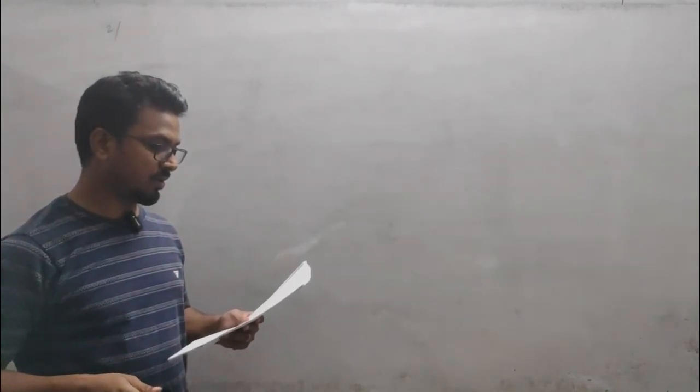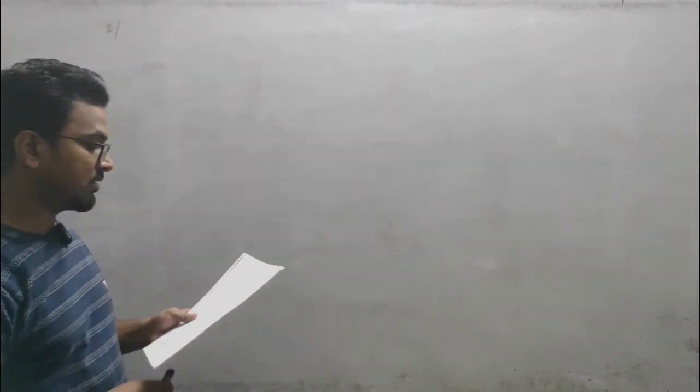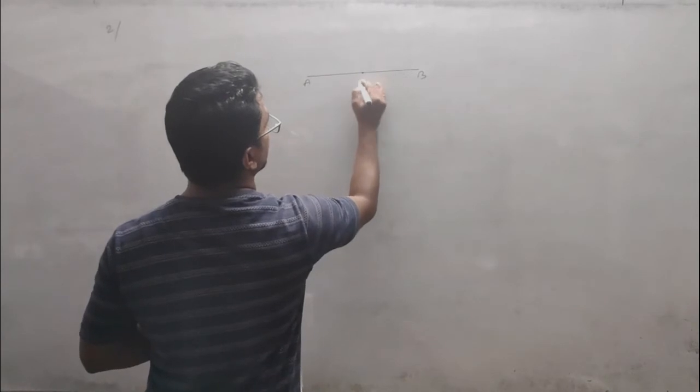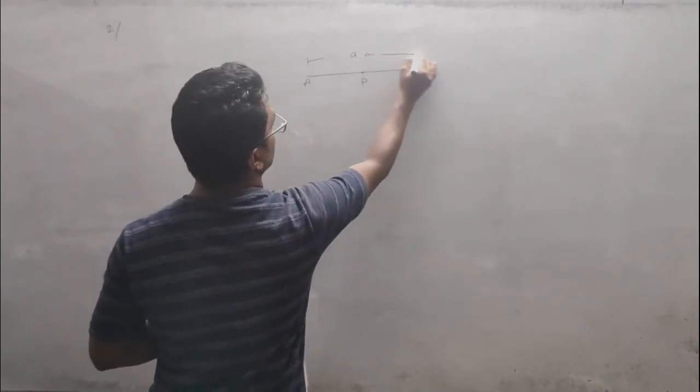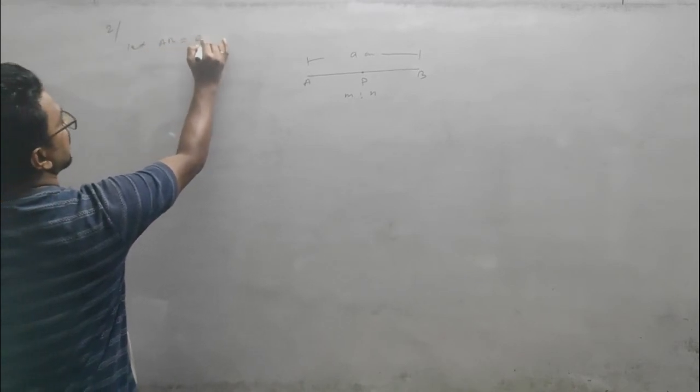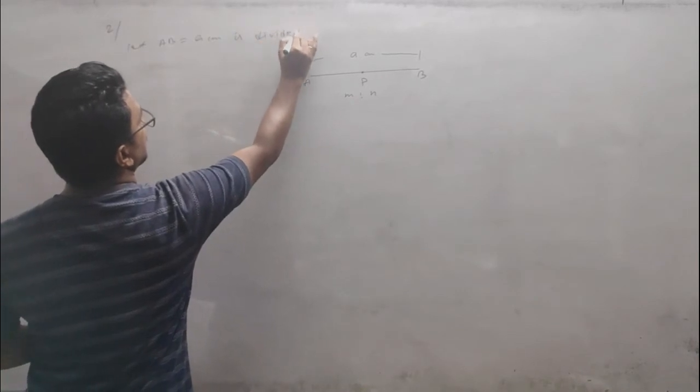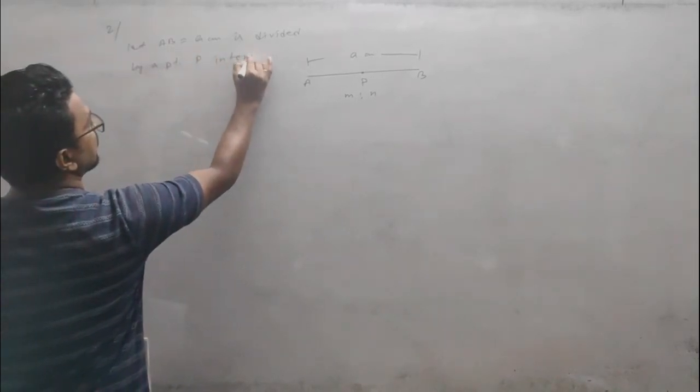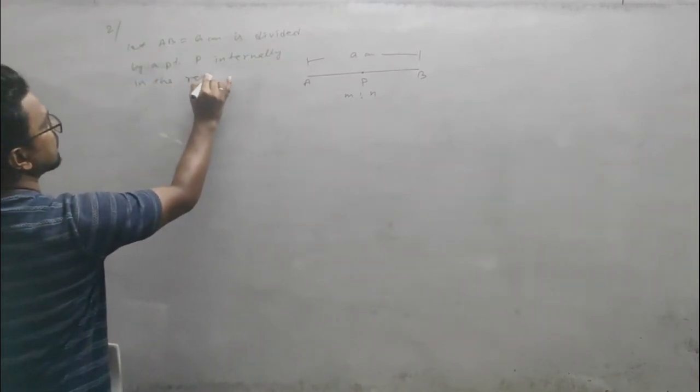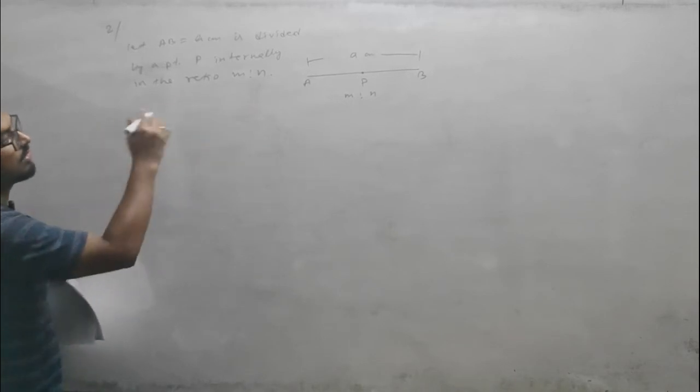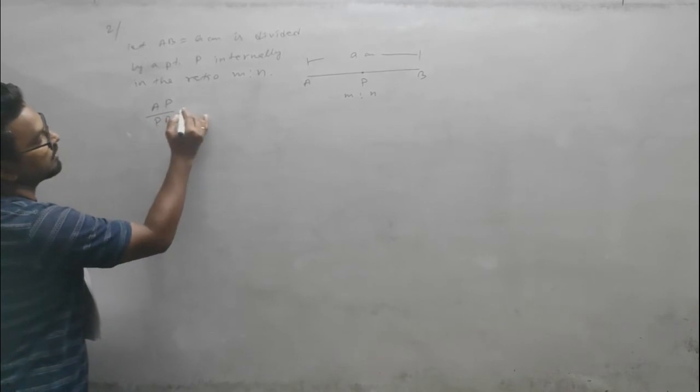The lengths of the segments are ma/(m+n) and na/(m+n). Let AB equal 'a' centimeters, divided by point P internally in the ratio m:n. So internally, AP/PB = m/n.